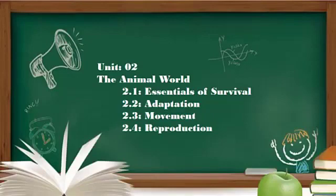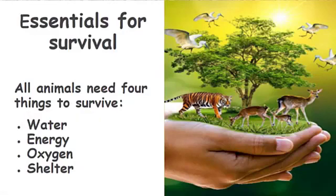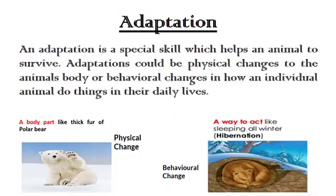The contents of this lesson are: essentials of survival, adaptation, movement, and reproduction. First, have a look back on our previous lectures. Previously, we learned about the animals' essentials of survival, which were water, energy, oxygen, and shelter.